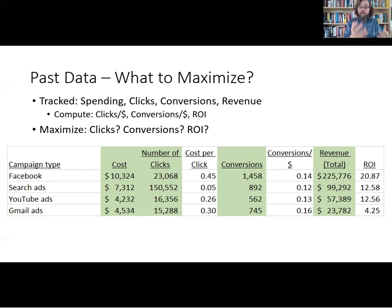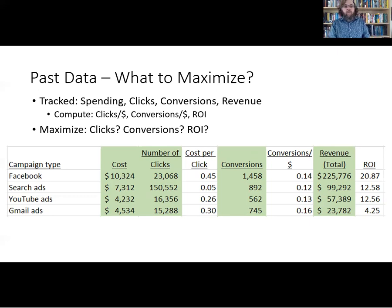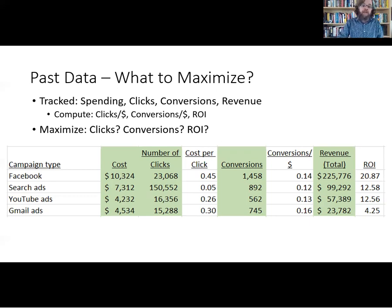If you don't have all this information, then you just have to do the best that you can. If we wanted to maximize the number of clicks, then looking at minimizing the cost per click might be the way to go. Or we could compute it the other way and look at the number of clicks per dollar to maximize clicks.